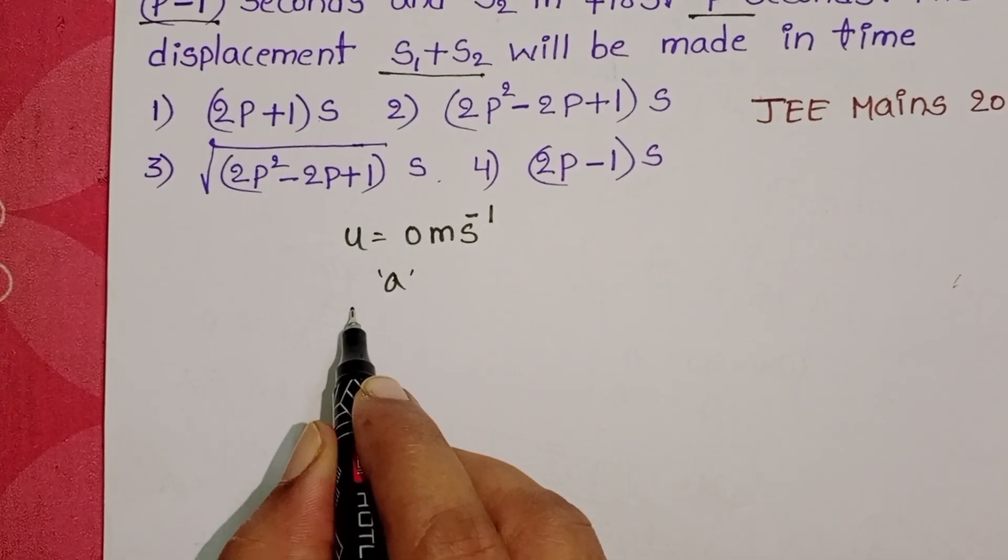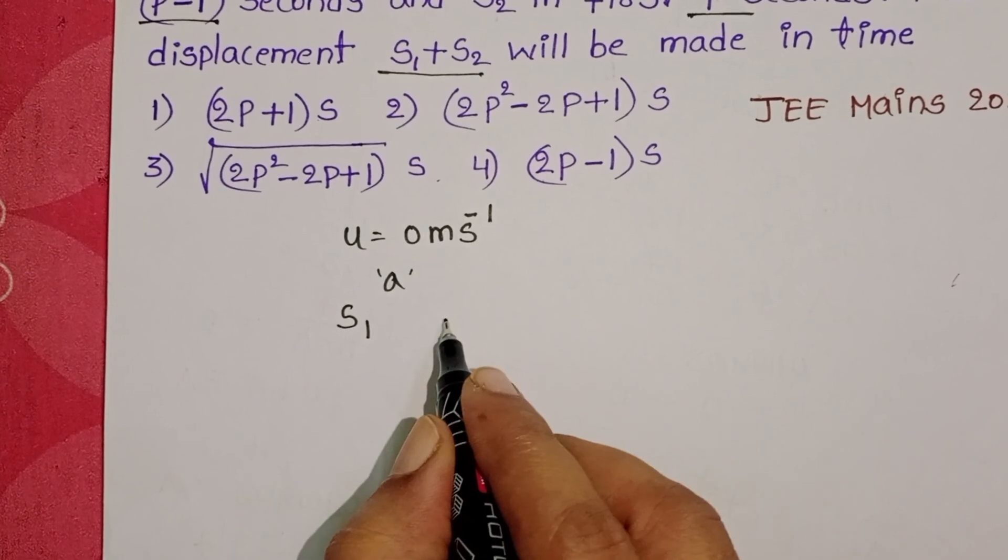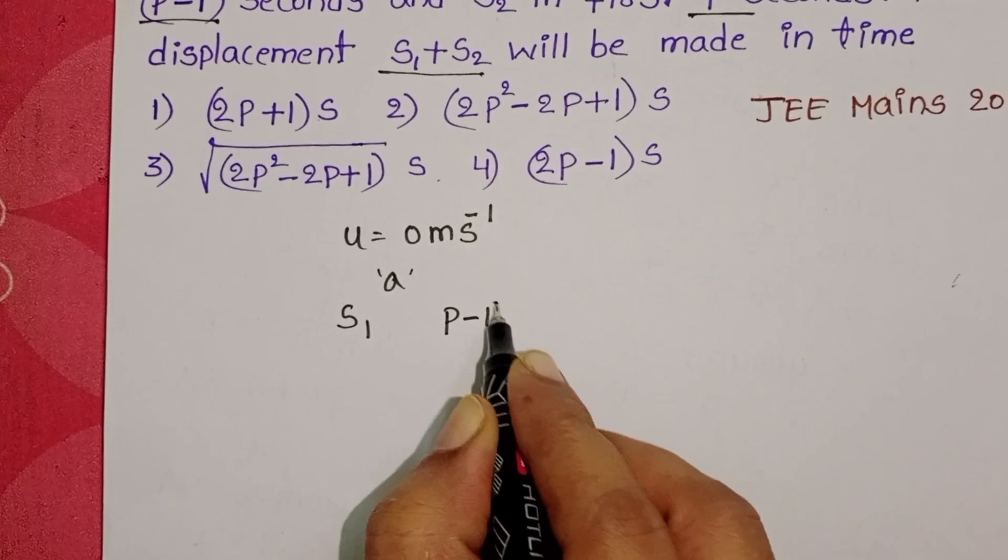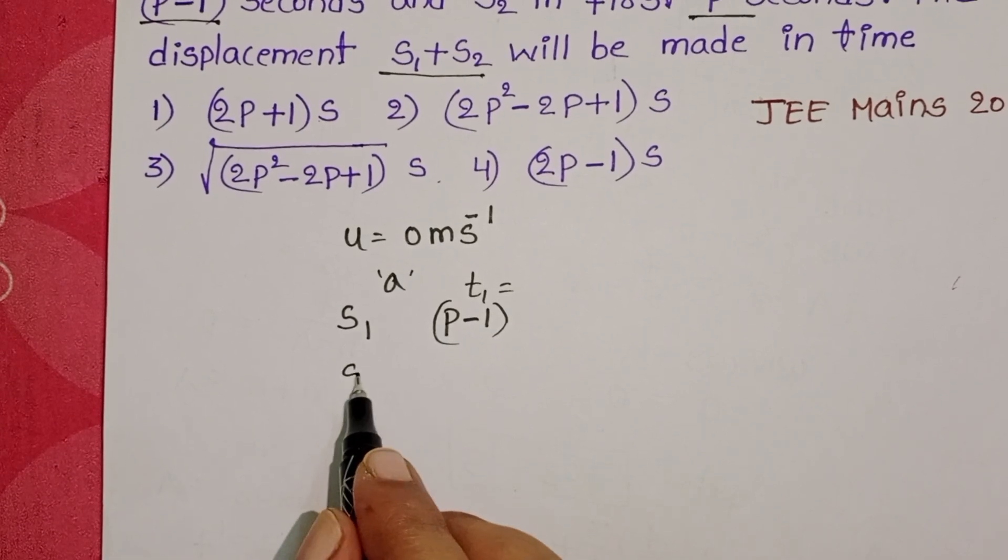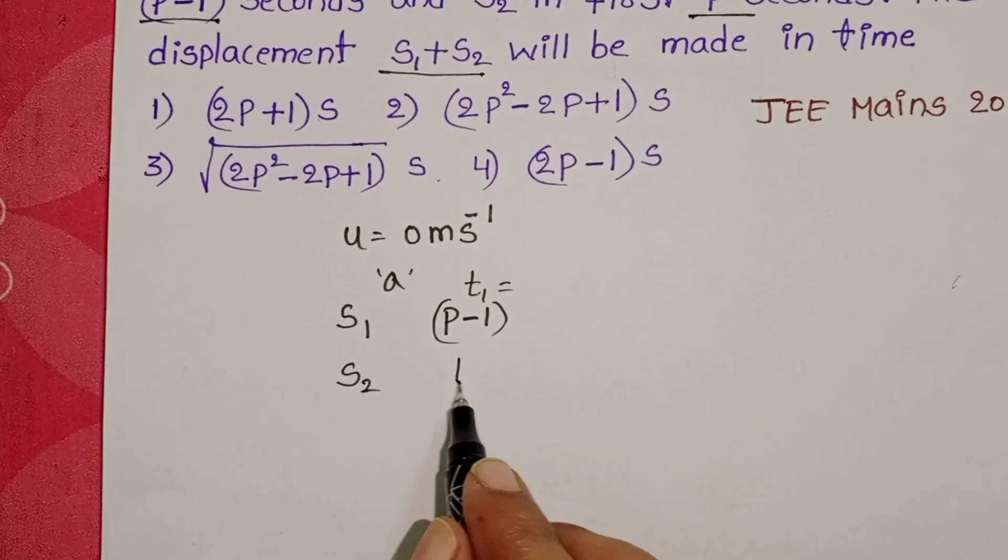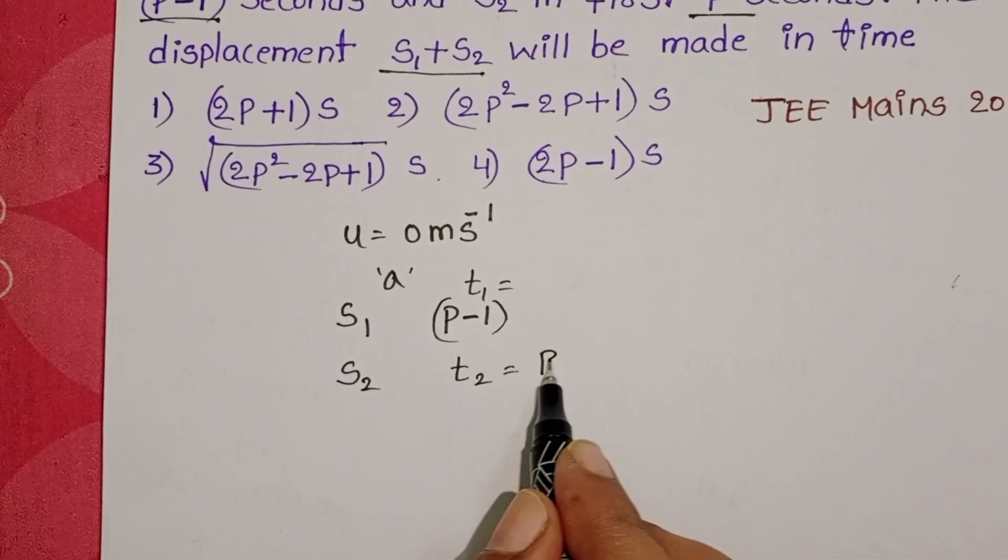S1 is the distance travelled by the body in the first P-1 seconds. This is time T1. And distance S2 is travelled in first P seconds.